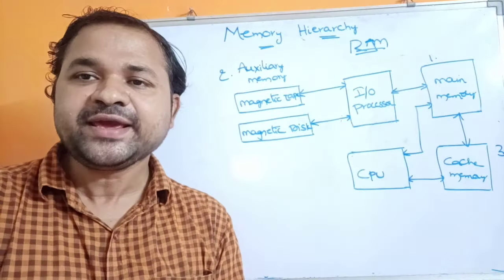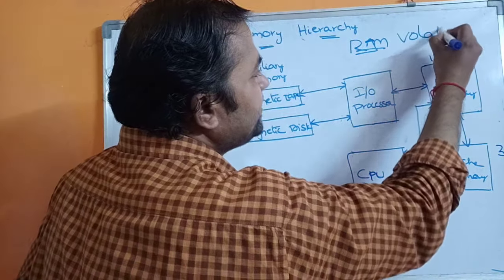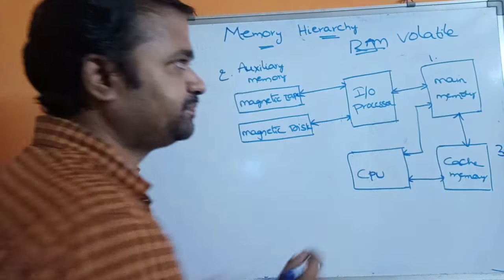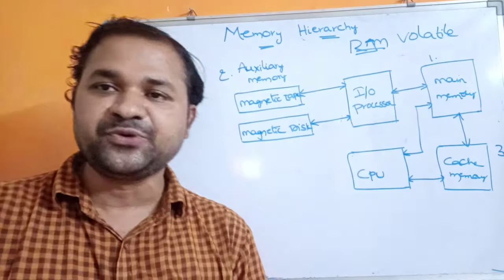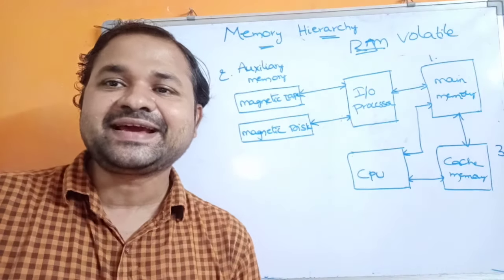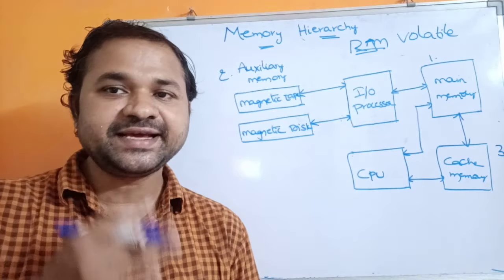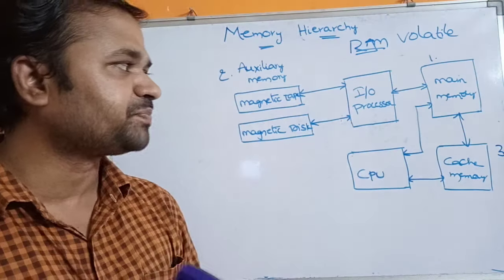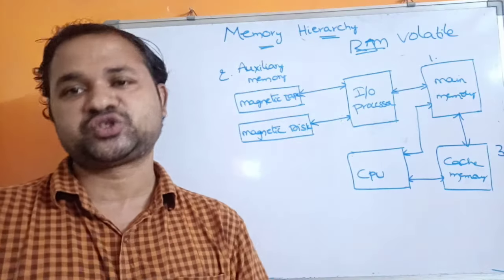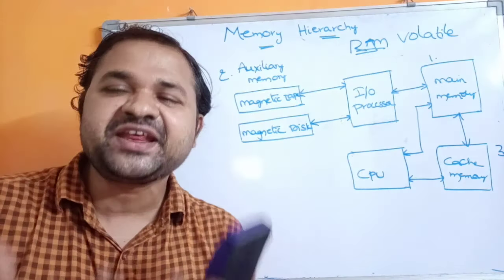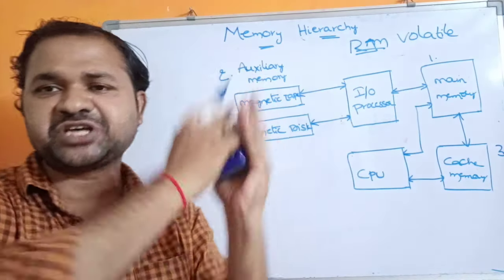Main memory is called volatile memory. That means whenever we switch off the computer, the entire content of the main memory will be lost. Main memory can also be called primary memory, because main memory is very important in order to execute instructions by the CPU.